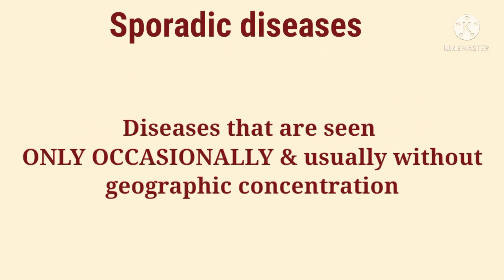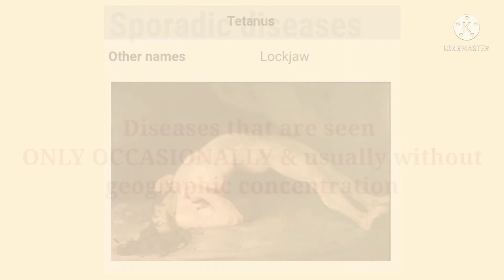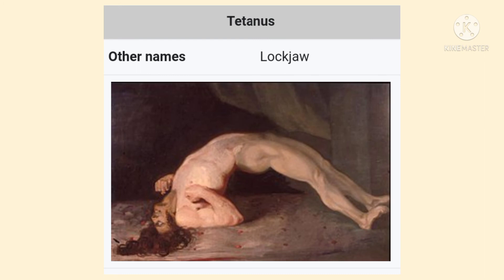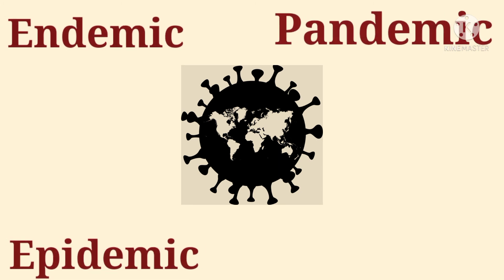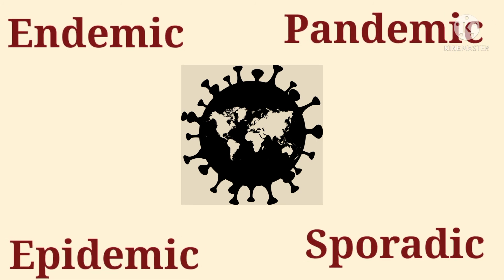Next we'll see what are sporadic diseases. Diseases that are seen only occasionally and usually without geographic concentration are called sporadic diseases. For example, in the United States, tetanus is considered sporadic. The tetanus-causing bacteria is present in the soil everywhere in the United States, but tetanus infections are very rare.